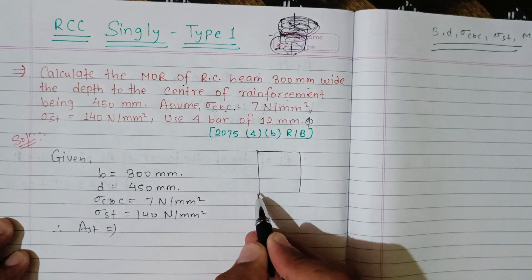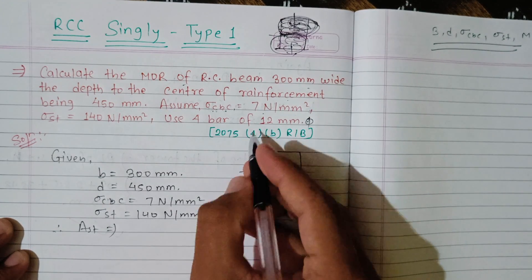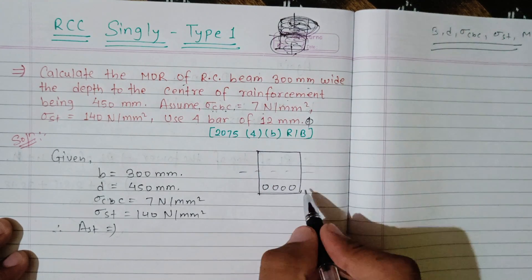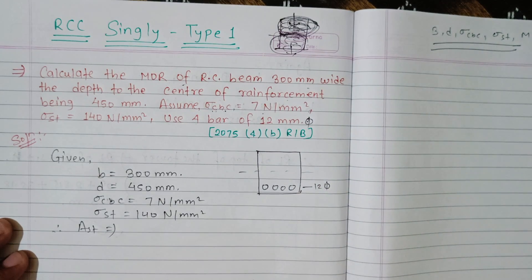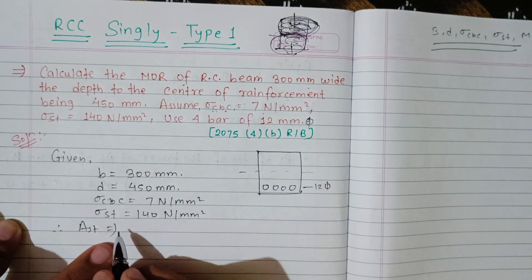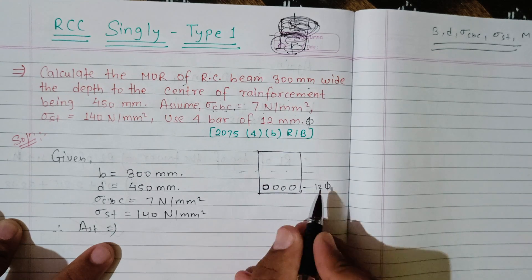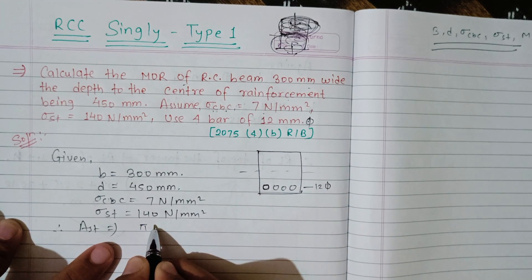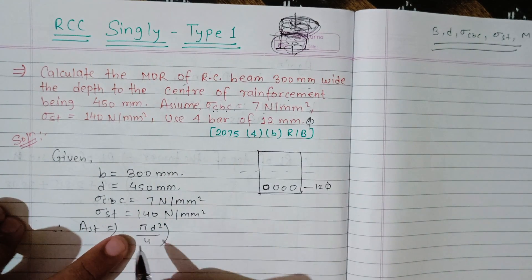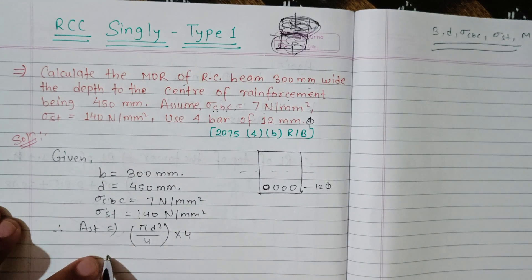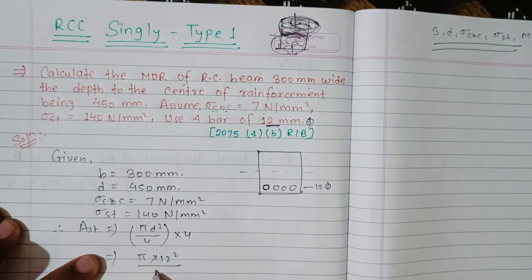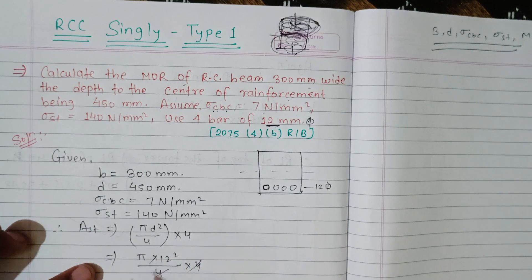Here is the cross-section showing the neutral axis. The area of each bar is pi*d squared by 4. So Ast equals pi*d squared by 4, calculated for each of the four bars.